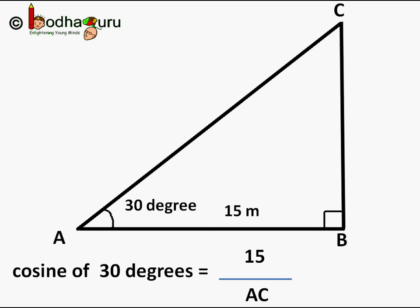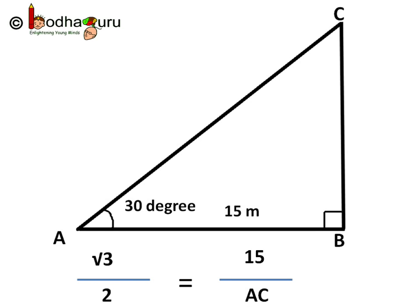15 is the measure of side AB. We know cosine of 30 degrees is square root of 3 by 2. So the formula becomes square root of 3 by 2 is equal to 15 by AC.